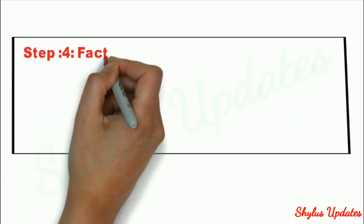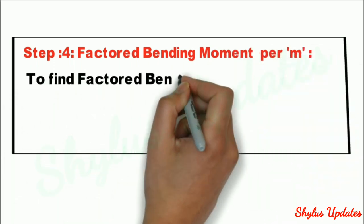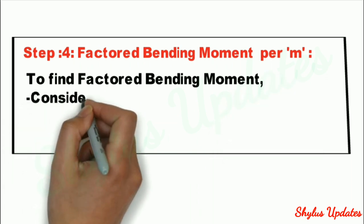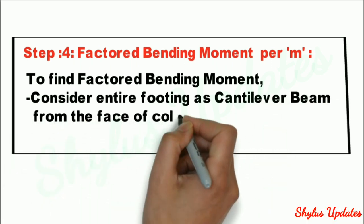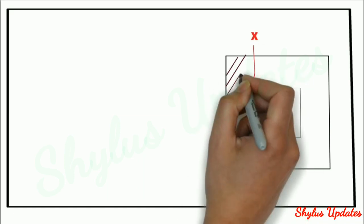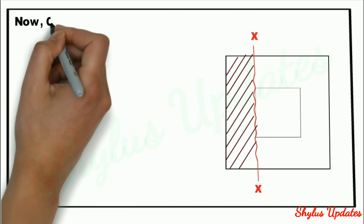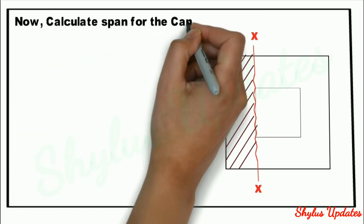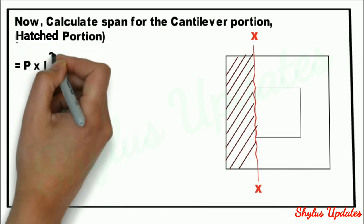Step 4: Factored bending moment per meter. To find factored bending moment, consider the entire footing as a cantilever beam from the face of the column. Then calculate the bending moment BM. Now calculate the span for the cantilever portion, that is the hatched portion. We know that the formula is P × L² divided by 2.